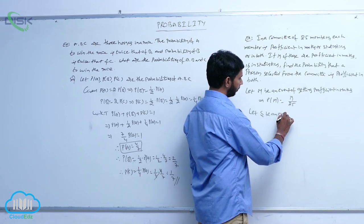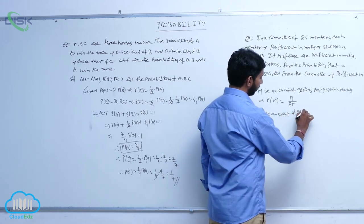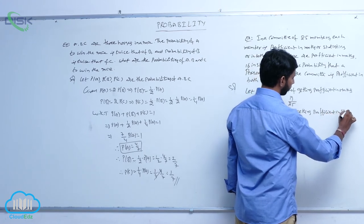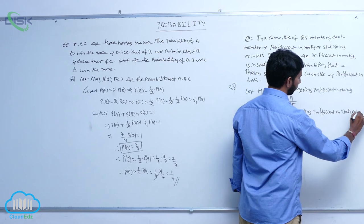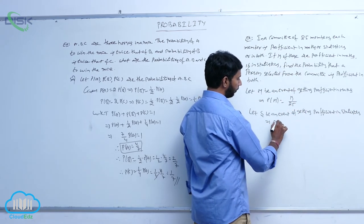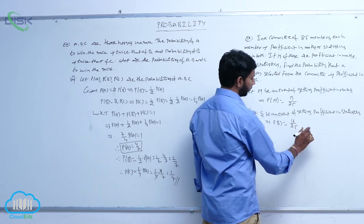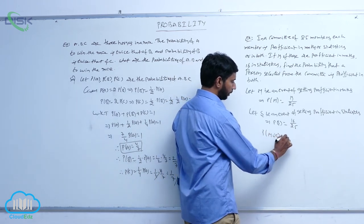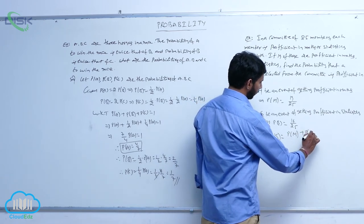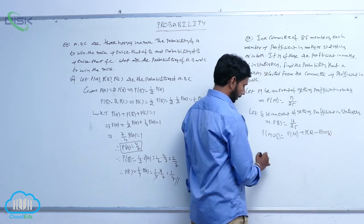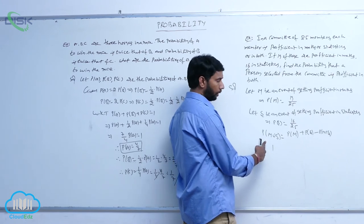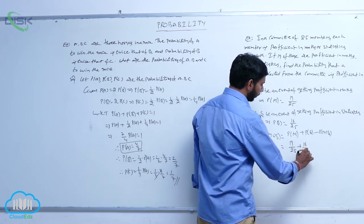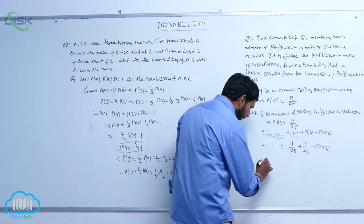Let S be an event of getting proficient in statistics. P(S) is equal to 16 by 25. Since every member is proficient in at least one subject, P(M union S) is equal to 1. Therefore, by the addition rule: P(M union S) equals P(M) plus P(S) minus P(M intersection S), giving 1 equals 19 by 25 plus 16 by 25 minus P(M intersection S).